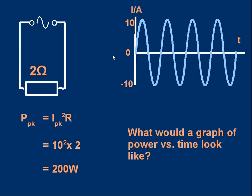What's happening is the current starts at zero, gradually increases to a maximum of 10 amps, and then decreases to zero. Then the current reverses direction and grows in size to minus 10 amps, and then goes back to zero.